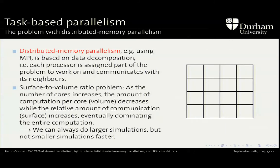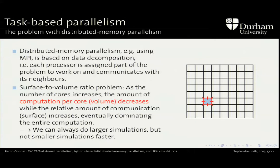Before going into the details, I'm going to say why the old paradigms are terrible. The most well-known way of writing parallel code is distributed memory parallelism, usually with MPI. This is based on the concept of a data decomposition — we spread data over the cores and in every time step, every core does a computation then communicates with its neighbors. The problem is the surface-to-volume ratio problem: as the number of cores increases, the amount of computation per core decreases, but the relative amount of communication actually increases. In the end, we have very little computation and a lot of communication, and that's where scaling dies. This means weak scaling only — we can do larger problems but we can never do problems of the same size faster, which is why Gadget simulations don't go faster than 20 seconds.